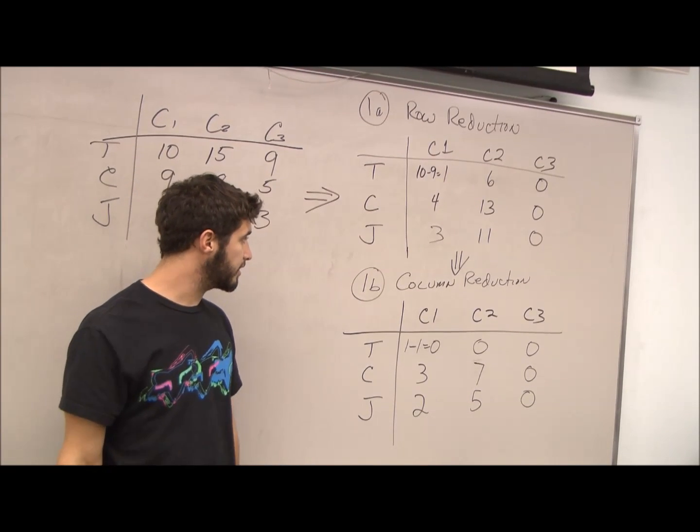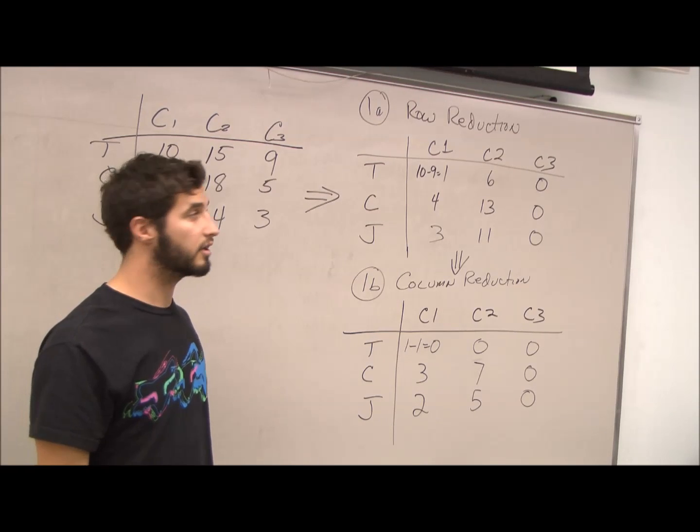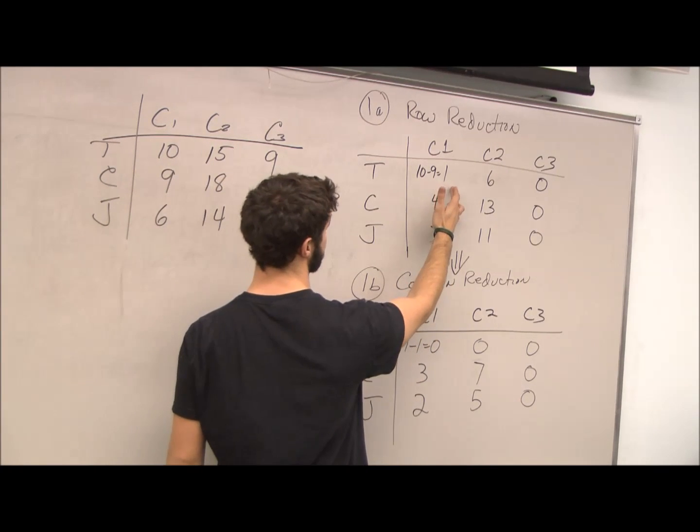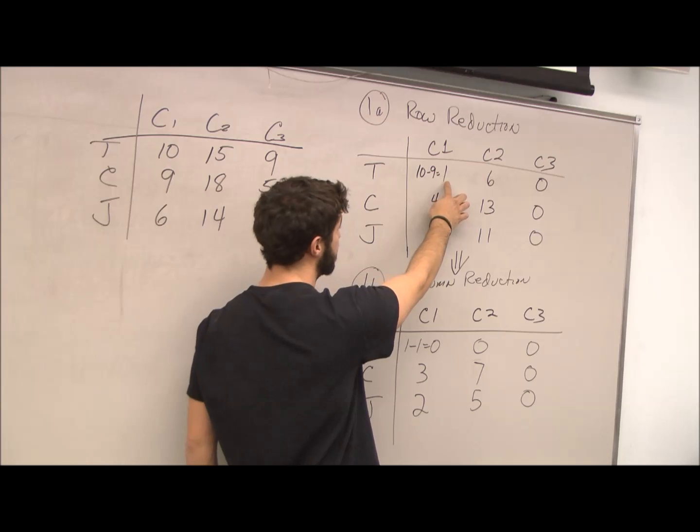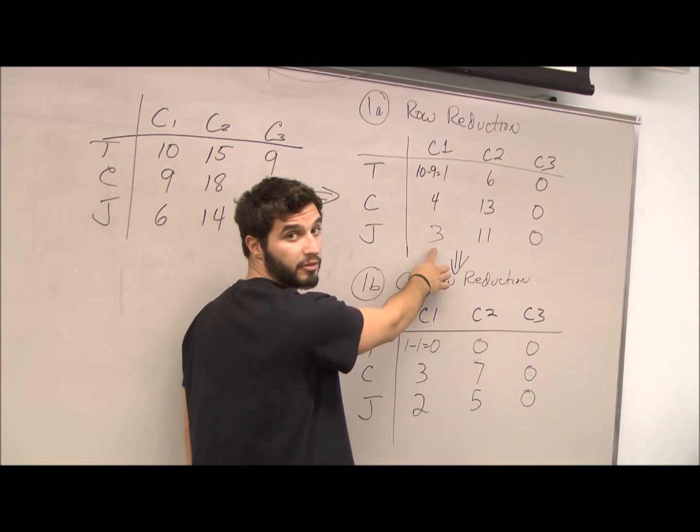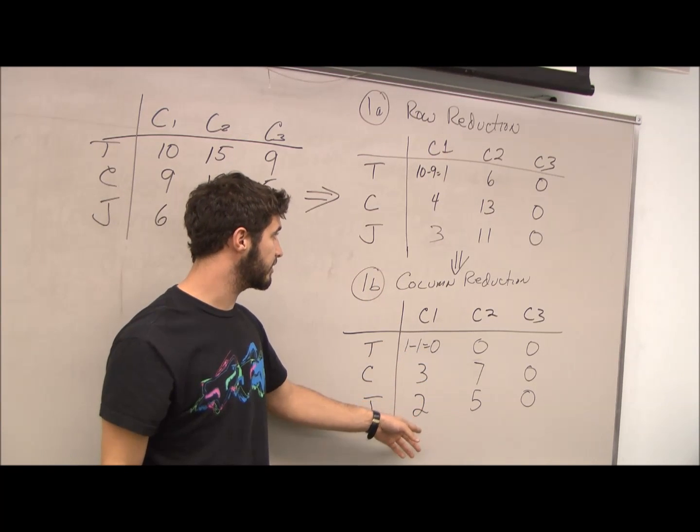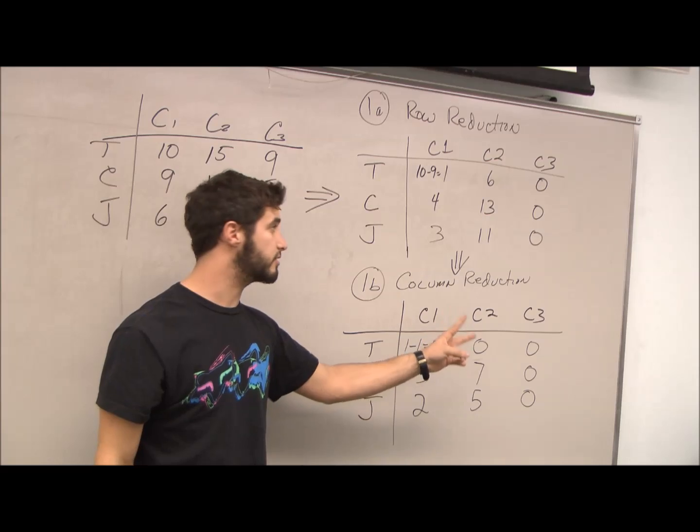And continuing on, for our column reduction, you will find the minimum value in each column. So for example, in C1, 1 is the minimum value here. So you subtract 1 from 1, 1 from 4, and 1 from 3. And that will transform into 0, 3, and 2. And you will continue those steps onward to the other columns.